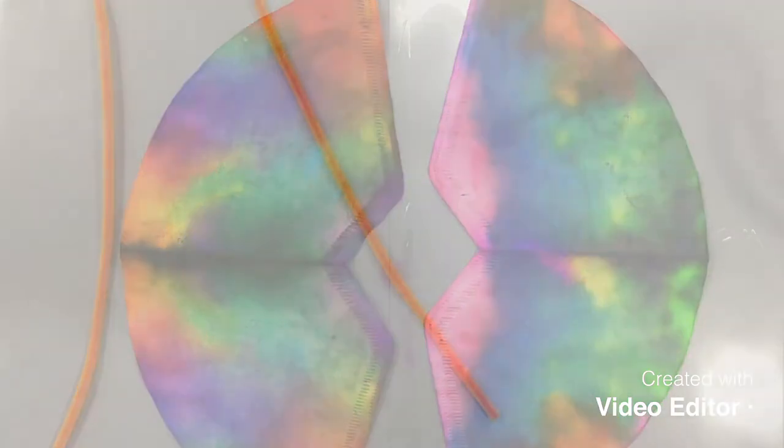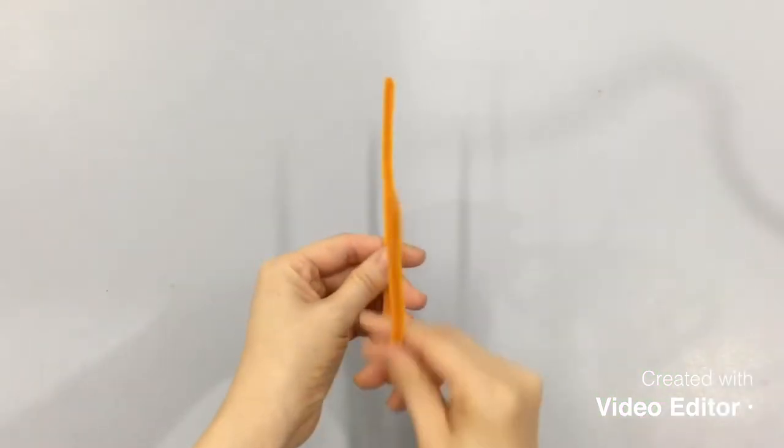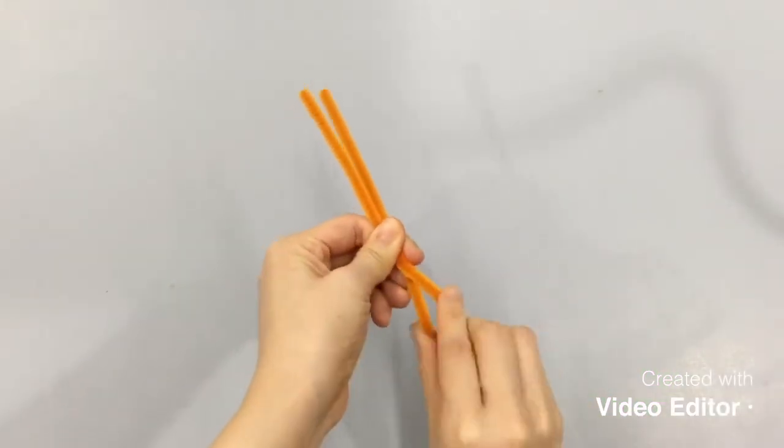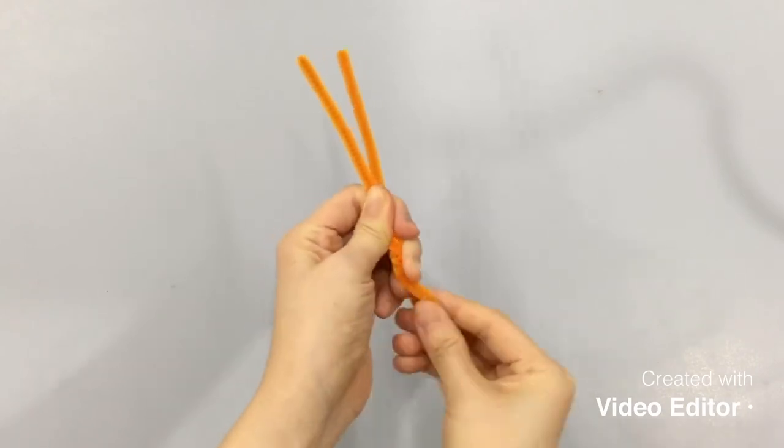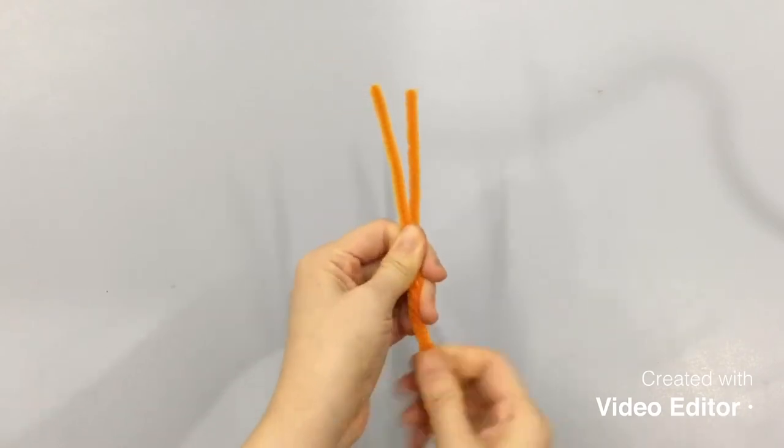Now we use this pipe cleaner to make the body of our butterfly. We bend it in half and holding it tight, we twist the bottom half with our fingers.